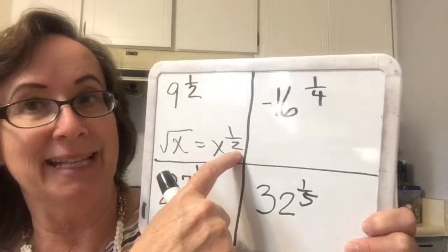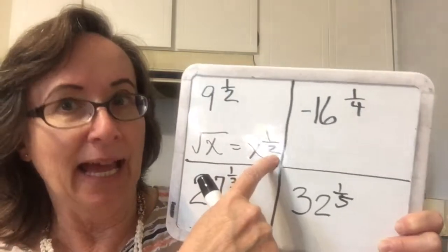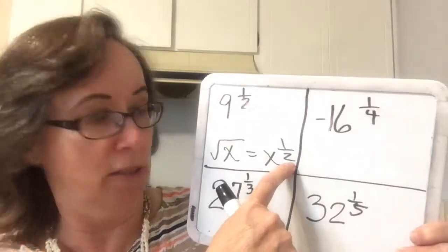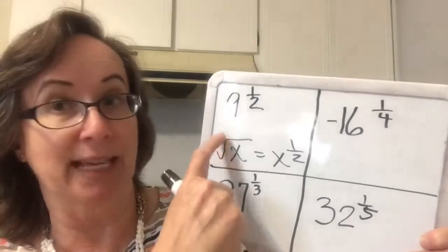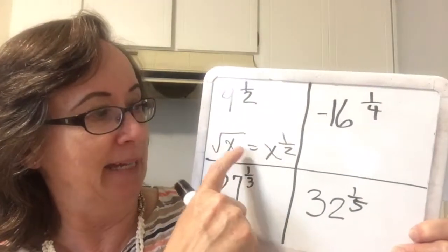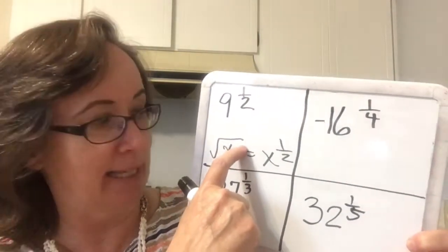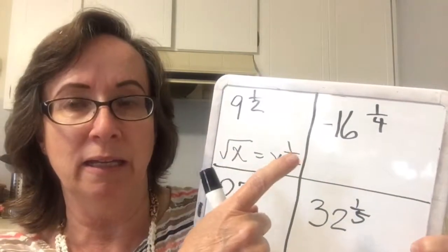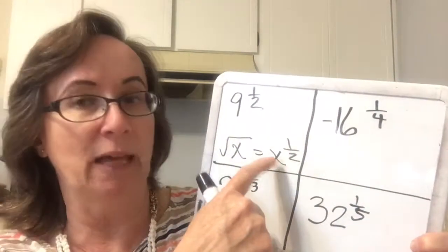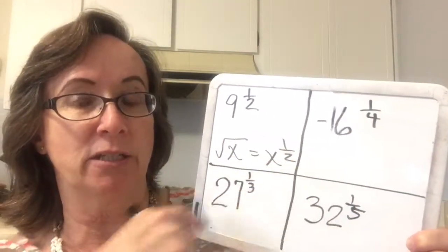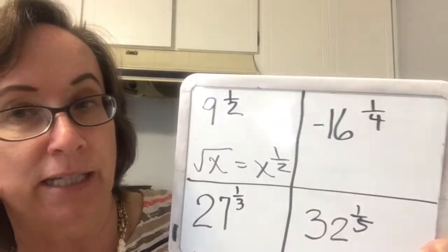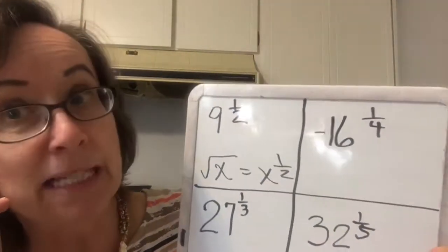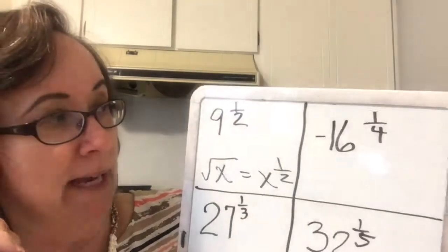When we have it in this exponent form, the 2 is the root because this was a square root, and the exponent on the x here is a 1. So it's the square root of x to the 1, and when we turn it into a rational exponent, it is x to the 1/2.